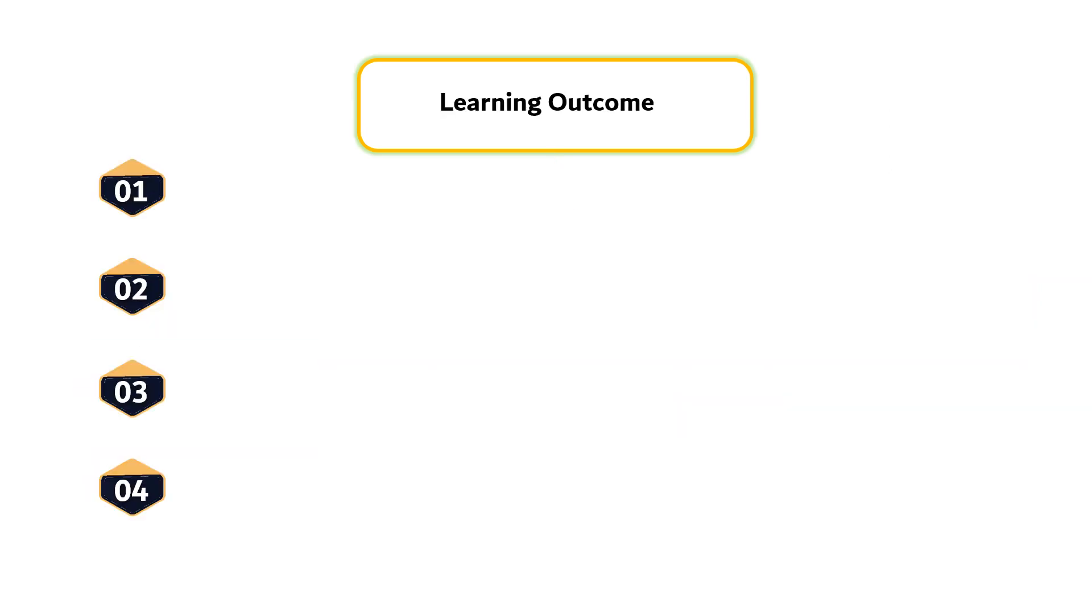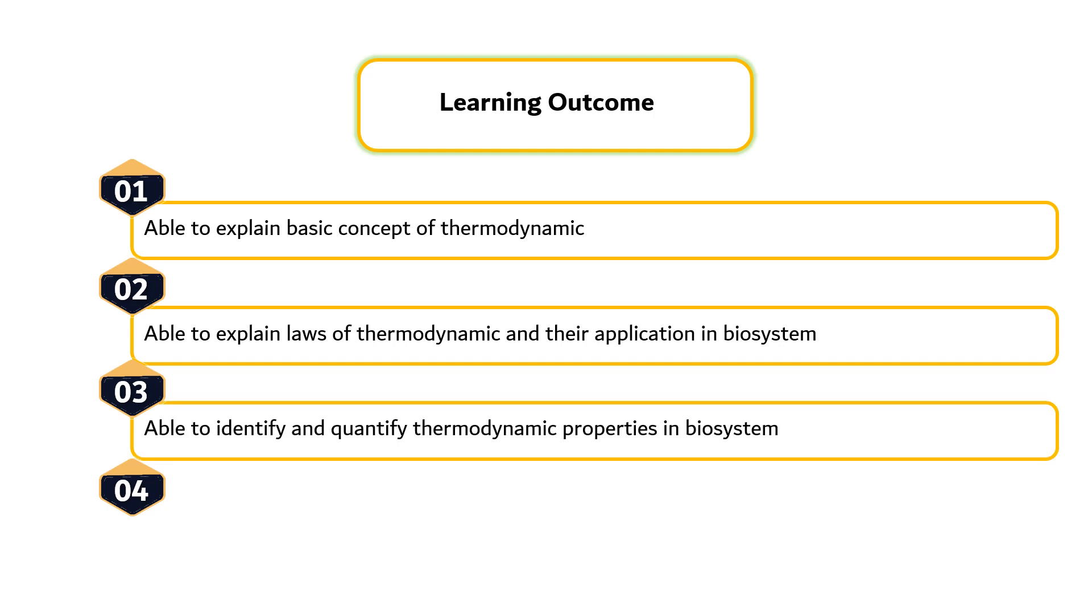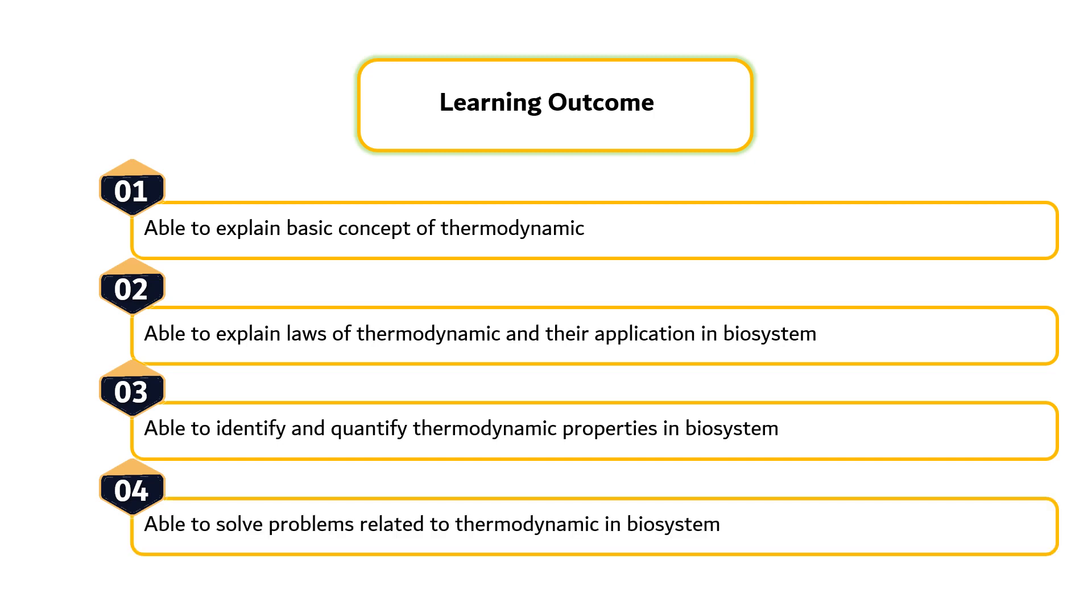There are four learning outcomes that need to be achieved by students at the end of this course. First, students are able to explain basic concepts of thermodynamics. Second, students are able to explain laws of thermodynamics and their application in biosystem. Third, students are able to identify and quantify thermodynamic properties in biosystem. Fourth, students are able to solve problems related to thermodynamics in biosystems.